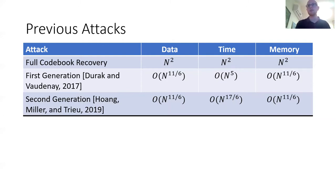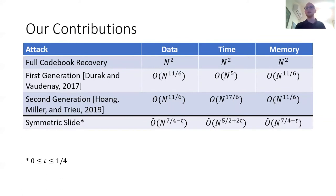We give three attacks beyond these existing attacks. The first attack is a symmetric slide. The symmetric slide attack is based on the second generation attack by Hoang et al. It significantly reduces the data complexity down to up to N to the power of 1.5, while also improving the time and memory complexities. Furthermore, it also allows a tradeoff between data and time, if that is required.